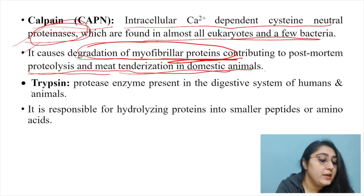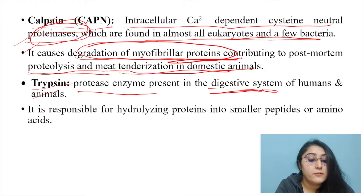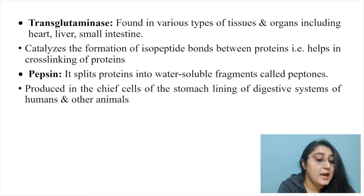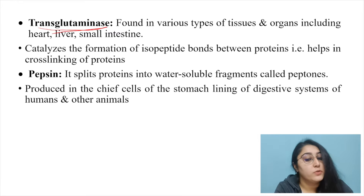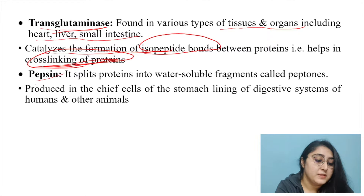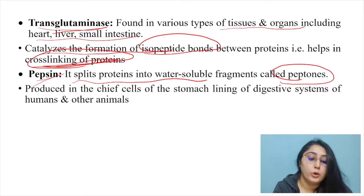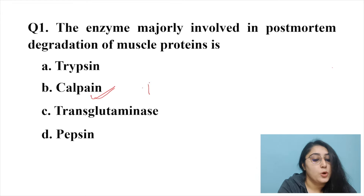Looking at the other options: trypsin is a protease in the digestive system responsible for breaking proteins into smaller peptides or amino acids. Transglutaminase catalyzes isopeptide bond formation between proteins, helping in cross-linking. Pepsin splits protein into water-soluble fragments called peptones and is produced in the stomach lining. Therefore, calpain — option B — is the correct answer.